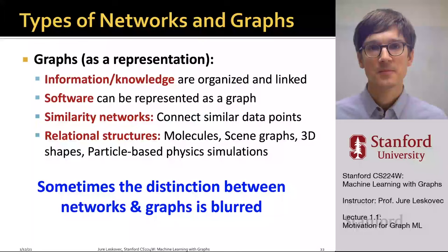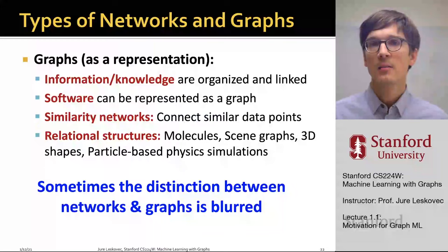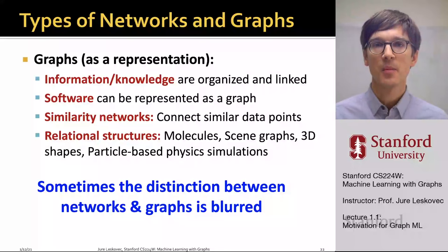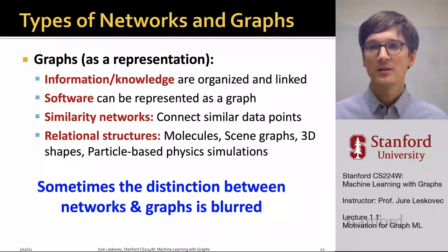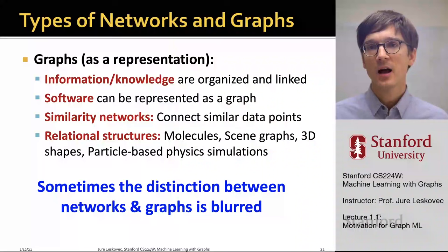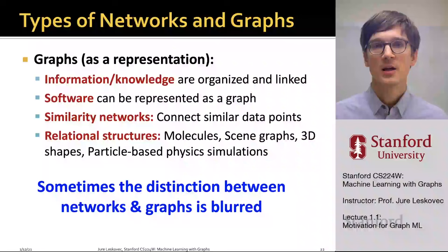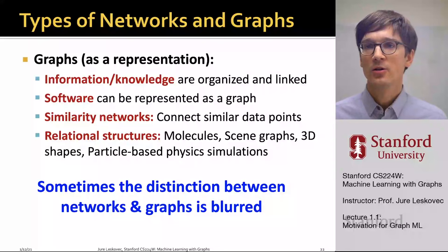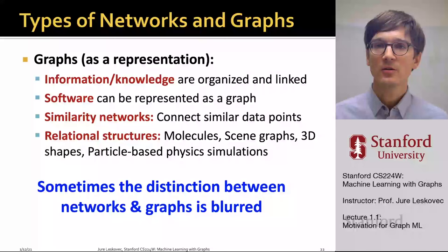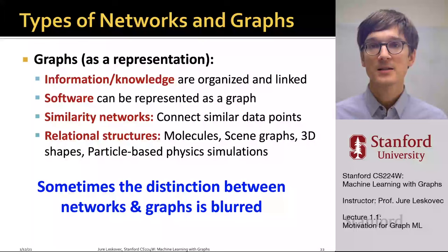A second category of domains also has relational structure, and we can use graphs to represent that structure. For example, information and knowledge is many times organized and linked. Software can be represented as a graph. We can take data points and connect similar ones to create a similarity network. And other domains that have natural relational structure — like molecules, scene graphs, 3D shapes, and in physics, particle-based simulations — can all be represented with a graph. So there are many different domains, both as natural graphs and as other domains that can be modeled as graphs to capture their relational structure.